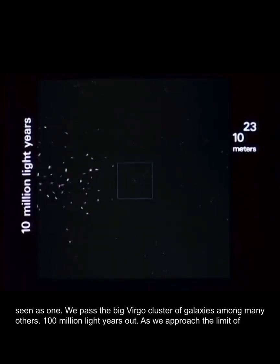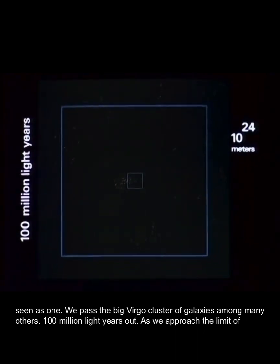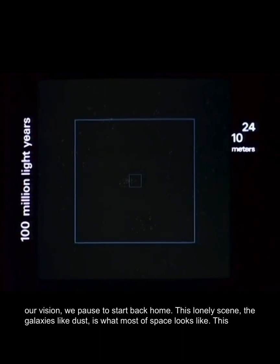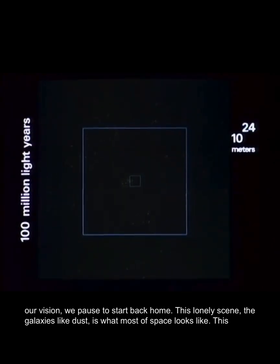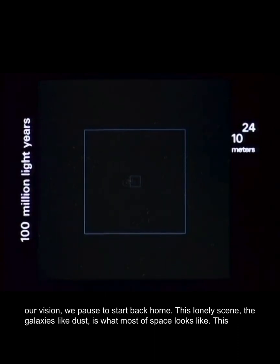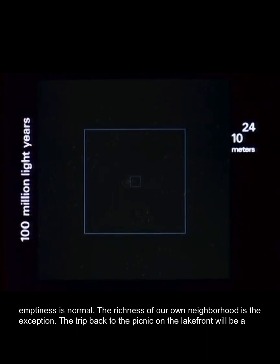We pass the big Virgo cluster of galaxies among many others, 100 million light years out. As we approach the limit of our vision, we pause to start back home. This lonely scene, the galaxies like dust, is what most of space looks like. This emptiness is normal. The richness of our own neighborhood is the exception.